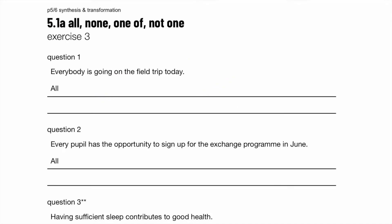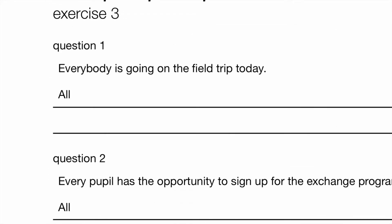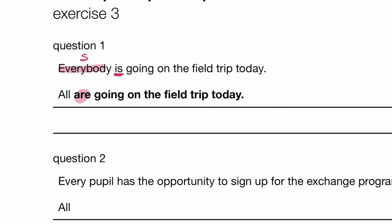Exercise 3, question 1: Everybody, which is singular, therefore 'is going on the field trip today,' using the present tense. When we change it to 'all,' we don't know if it's students or people, so just say: all are going on the field trip today. All is plural, therefore 'are' is used. Make sure you understand: 'everybody' is taken as singular in English, so we use a singular verb. But 'all,' when dealing with people which is countable, you use 'are,' the plural form. Keep both in present tense.